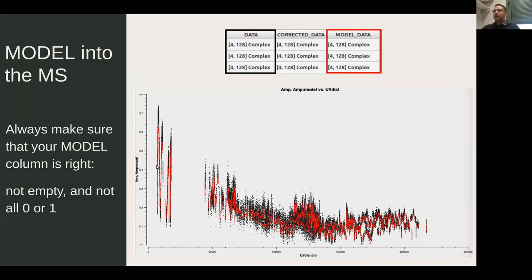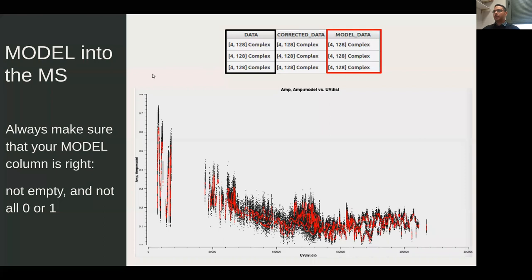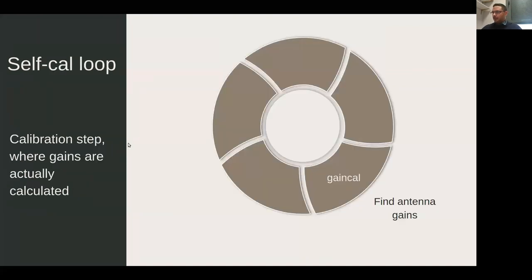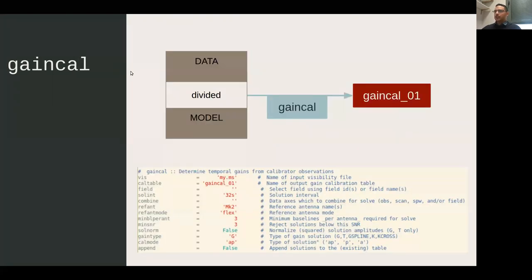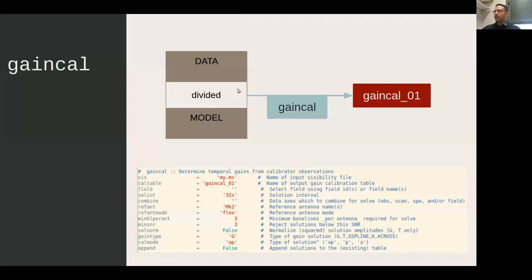Make sure that after tclean or ft, the model column is filled with data. The model should trace most of the emission very well. The DATA column and MODEL_DATA column should show the same shape in the UV plane. At the beginning, especially if your first image is not very good, the model will also not be very good. Then we use gaincal: we divide the data by the model and find the antenna gains, applying it to produce a calibration table.